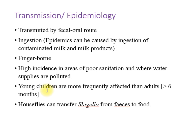Young children are more frequently affected than adults. House flies are also associated with shigellosis. They can transfer Shigella from feces to food. When feces are left in the open, house flies may sit on them and the bacteria sticks to their wings and body.